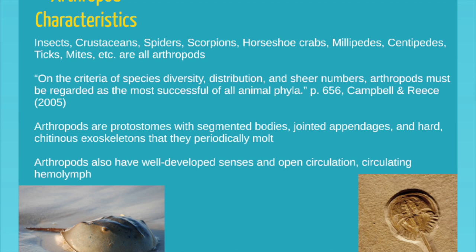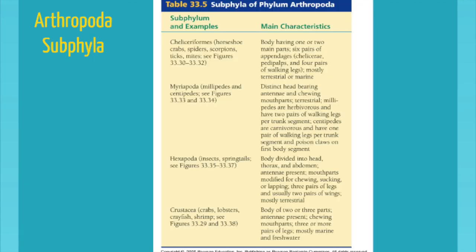Their success lies primarily in their exoskeleton, and also in the fact that they had these segments and pinches — these joints, these hinges — inside their body, outside their body, for the inside to exert force. They are among the first creatures to use a partnership between soft and hard tissue for the purpose of creating more strength, more leverage, and more power.